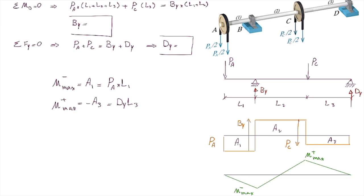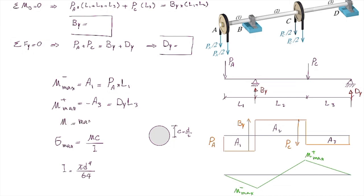To determine the bending stresses, note that the cross-section is a symmetric circle. So the maximum positive and negative stresses will be the same. The distance c equals half the external diameter, D over 2. The bending stress is calculated as M times c over I, where the moment of inertia for a shaft is π times diameter to the fourth power over 64. The moment used in this equation is the maximum absolute value of the positive and negative moments calculated before. We can now plug in the numbers and calculate the maximum bending stress in this shaft.